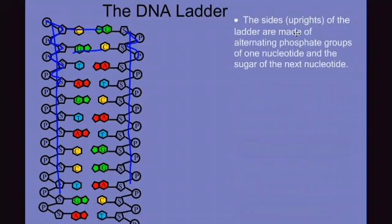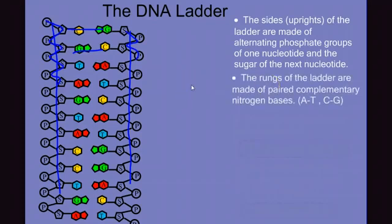So we can see that the sides of the uprights are made of alternating phosphate groups of one nucleotide with the sugar of the next. And the rungs of the ladder are made of pairs of complementary bases, A's with T's and C's with G's.